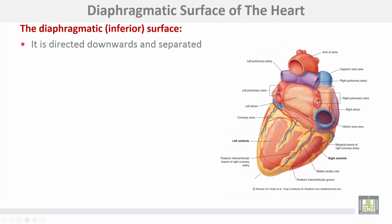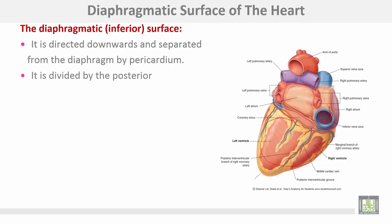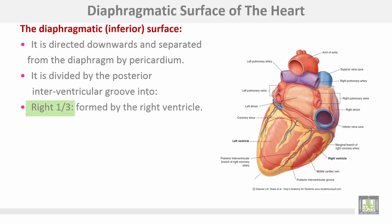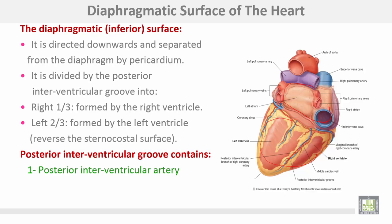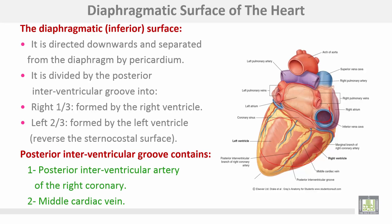The diaphragmatic surface is directed downwards and separated from the diaphragm by the pericardium. It is divided by the posterior interventricular groove into a right one-third formed by the right ventricle and a left two-thirds formed by the left ventricle — the reverse of the sternocostal surface. The posterior interventricular groove contains the posterior interventricular artery of the right coronary and the middle cardiac vein.